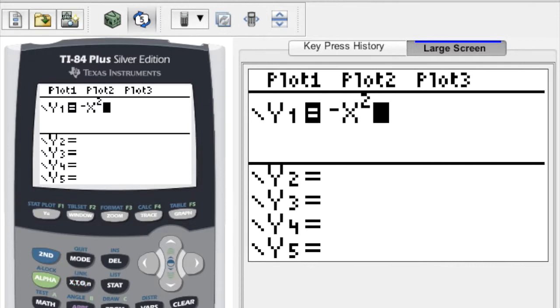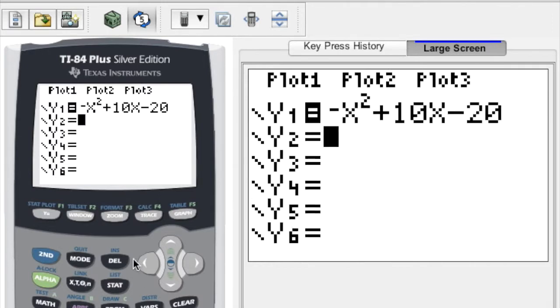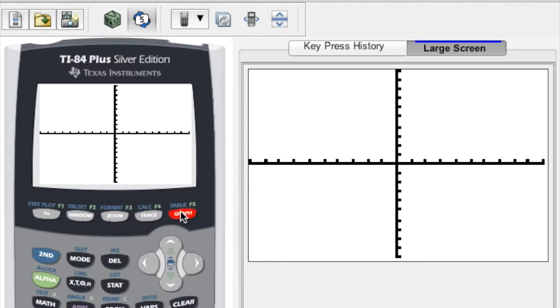Negative X squared plus 10X minus 20 is going to be entered into our Y1 spot, and let's just check what that graph looks like to make sure we've got the right one. Yep, looks like we do. We've got an upside-down parabola. Looks like we've got from 3 to 7 that we want to find, so we're good there.